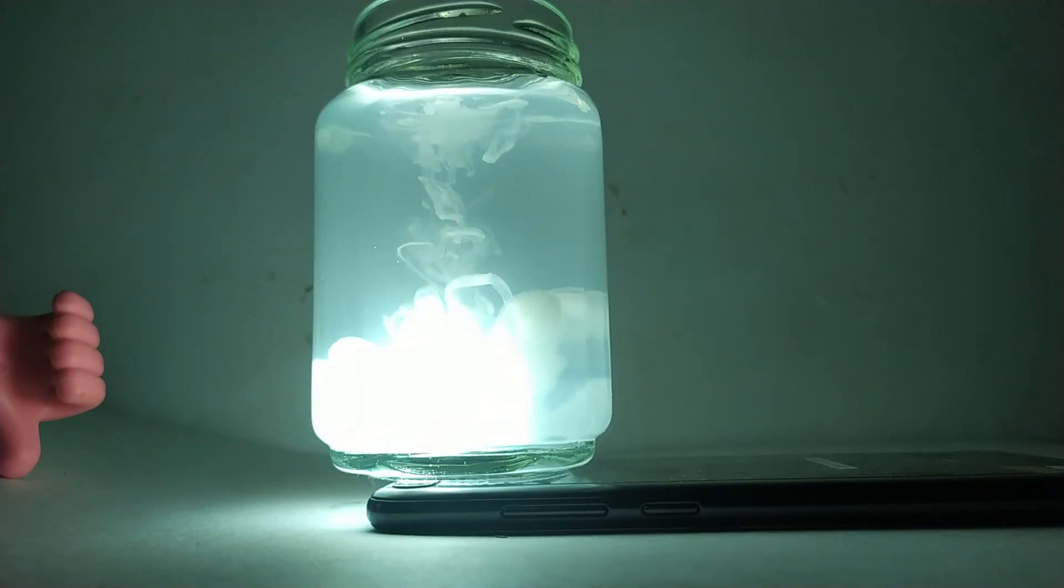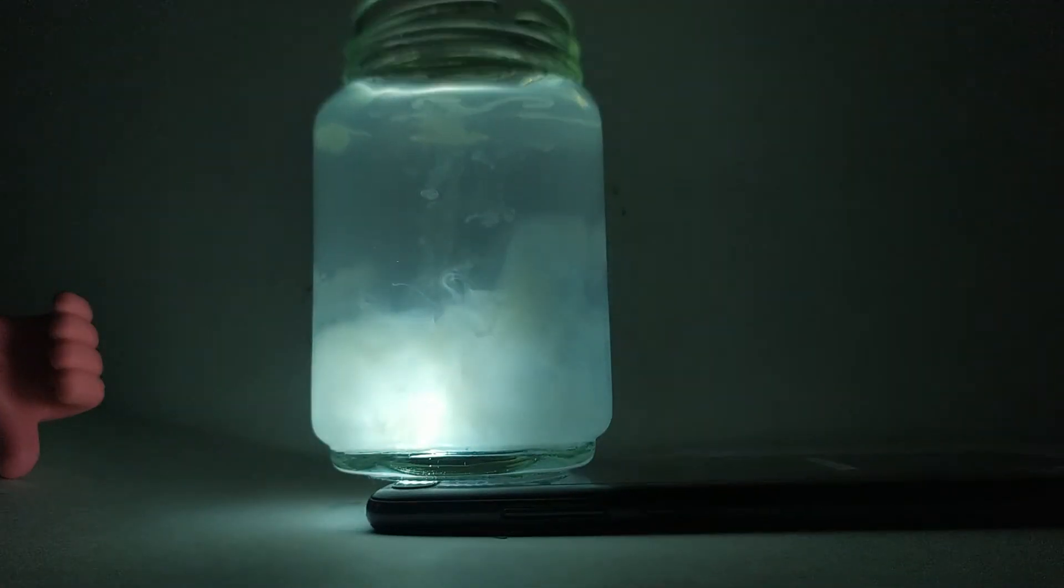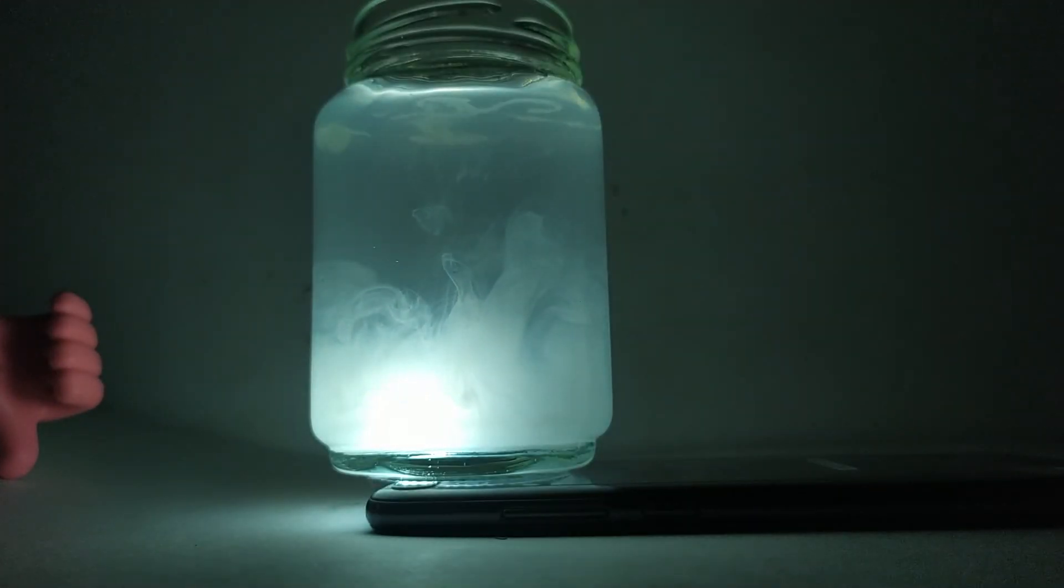Water droplets in the sky are large enough to scatter the entire spectrum of visible light. Equal scattering of all wavelengths, called Mie scattering, makes clouds appear white against the background of the blue sky.